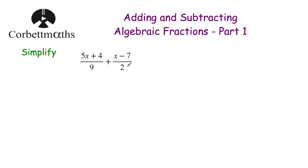We've got 9 and we've got 2, so I'm thinking 18 because the multiples of 9 go 9, 18 and the multiples of 2 eventually reach 18 as well. So we can multiply both the numerator and denominator of this fraction by 2, and both the numerator and denominator of this fraction by 9. That'll give us both fractions with 18 on the denominator. So let's have a look at multiplying both the numerator and denominator of this fraction by 2.